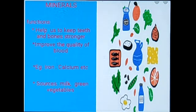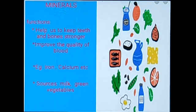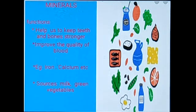Now we will discuss another important type of nutrient: minerals. The function of minerals is to keep our teeth and bones stronger, and they also improve the quality of blood. Examples of minerals are iron and calcium — calcium helps strengthen bones and teeth, while iron improves the quality of our blood. Sources of minerals are milk and green vegetables.